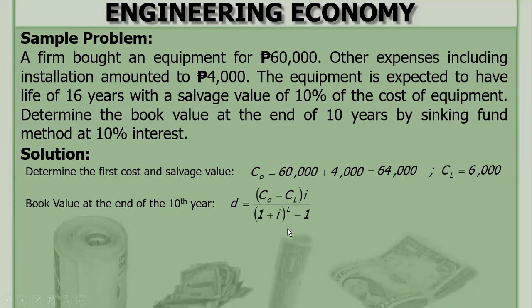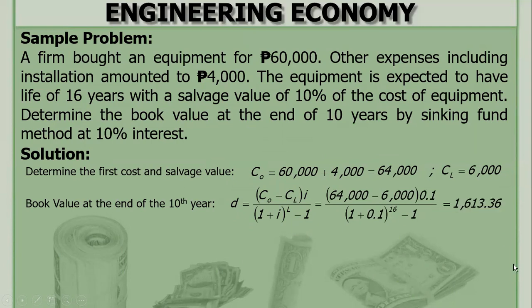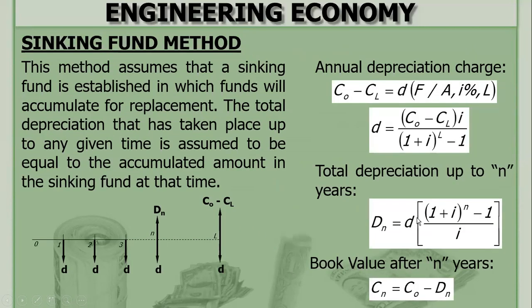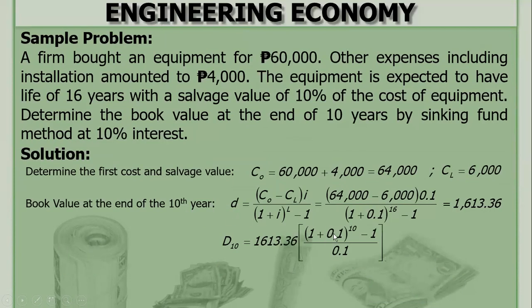The annual depreciation charge is solved using CO = 64,000, CL = 6,000, I (interest rate), and L = 16 years. The annual depreciation charge is 1,613.36 pesos. For total depreciation, N = 10 years. The total depreciation after 10 years is 25,712.87 pesos. Then the book value is CO minus D sub N, giving the book value at the end of year 10.